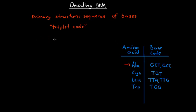Another important part of our DNA information is the concept of an allele. A lot of the triplet codes and proteins that our body produces are going to be the same for every person — every person has eyes, every person has hair — so all of our bodies are going to produce a lot of proteins that are in fact exactly the same.